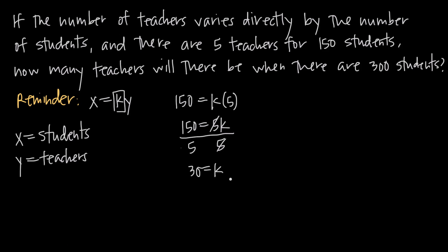When k is not given, the goal is always to solve for k first — you need a value for k in order to answer the question. Now that we have k = 30, we can move on to answer what was actually asked.